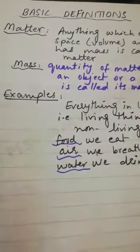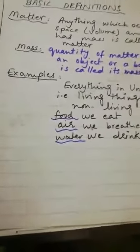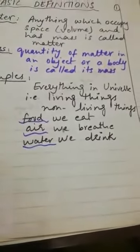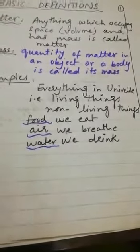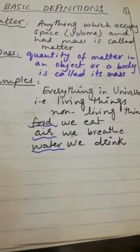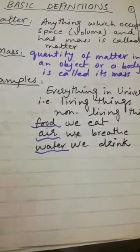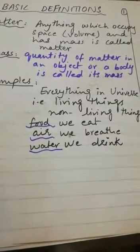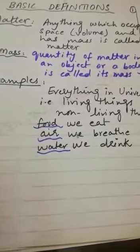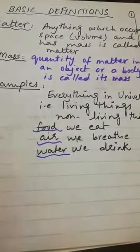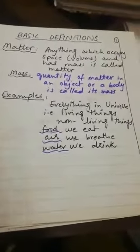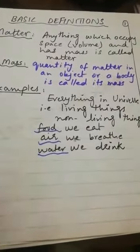Everything in this universe around us, whether living things or non-living things, are examples of matter. Living things include human beings, plants, and animals. Non-living things include the book you are reading, the pen in your hand, the food we eat, the air we breathe, the water we drink, the table, the chair, and the laptop — all are examples of matter.